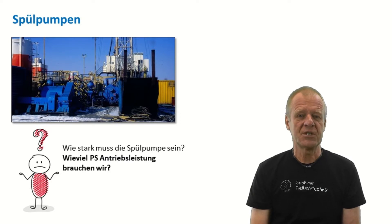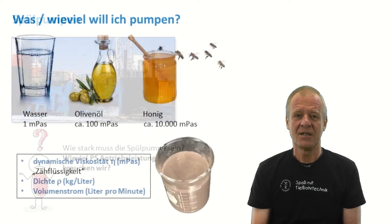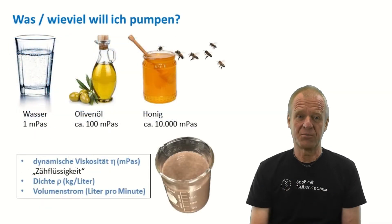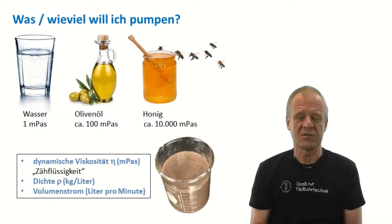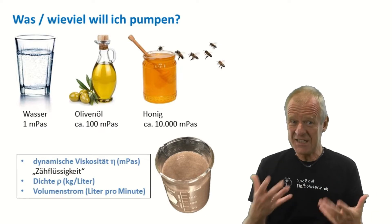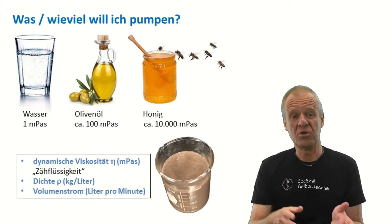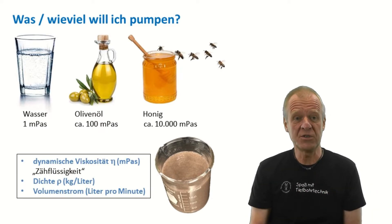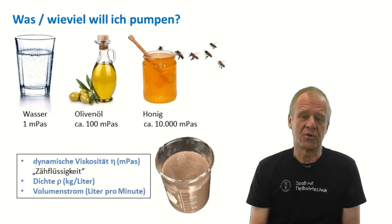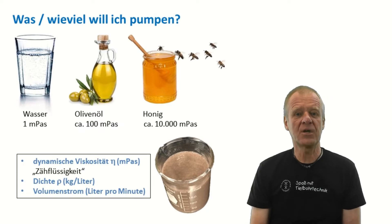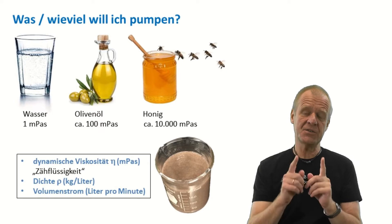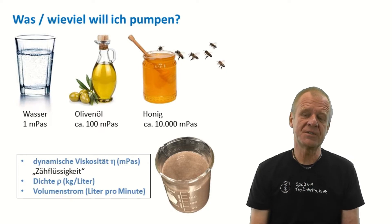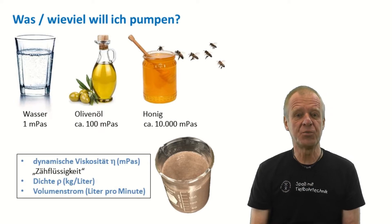To answer this question, the engineer must first think about the properties of the fluid that is to be pumped. How viscous is it? Is it like water, like oil, or like honey? What is the density of the mud — how many kilograms does each litre weigh? And most importantly, we need to know how much drilling mud needs to be pumped.